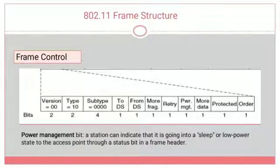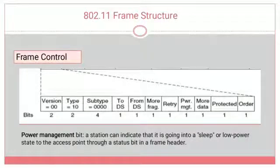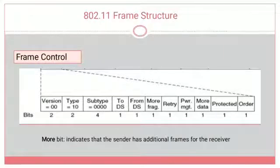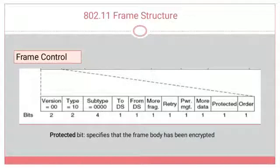The Power Management bit (1 bit) indicates whether the station is going into a sleep or low-power state, communicating this status to the access point via the frame header. The More Data bit (1 bit) indicates that the sender has additional frames for the receiver — for example, when extra or redundant bits are appended to the original data.